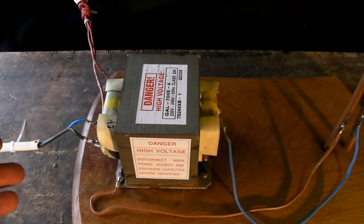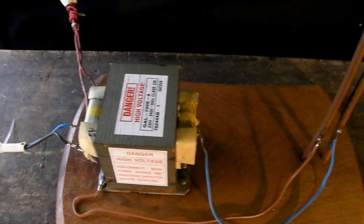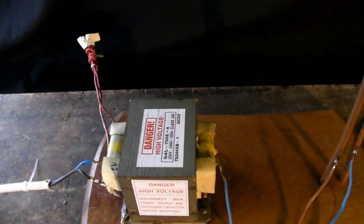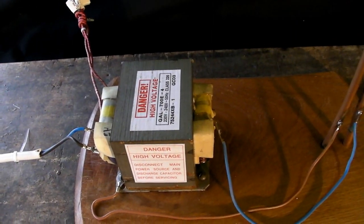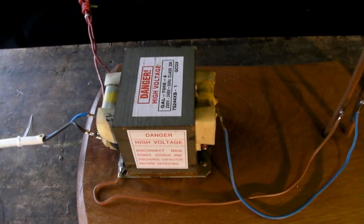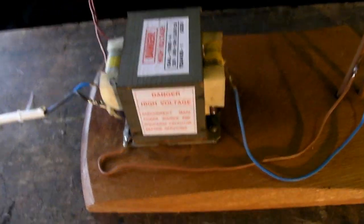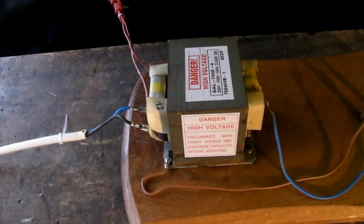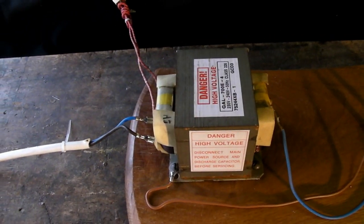Well okay, a transformer is basically a really simple device for turning one AC voltage into another AC voltage. Now it's important that you use AC because these things don't work with DC and we'll talk about that in a second. But there are three main parts to a transformer.